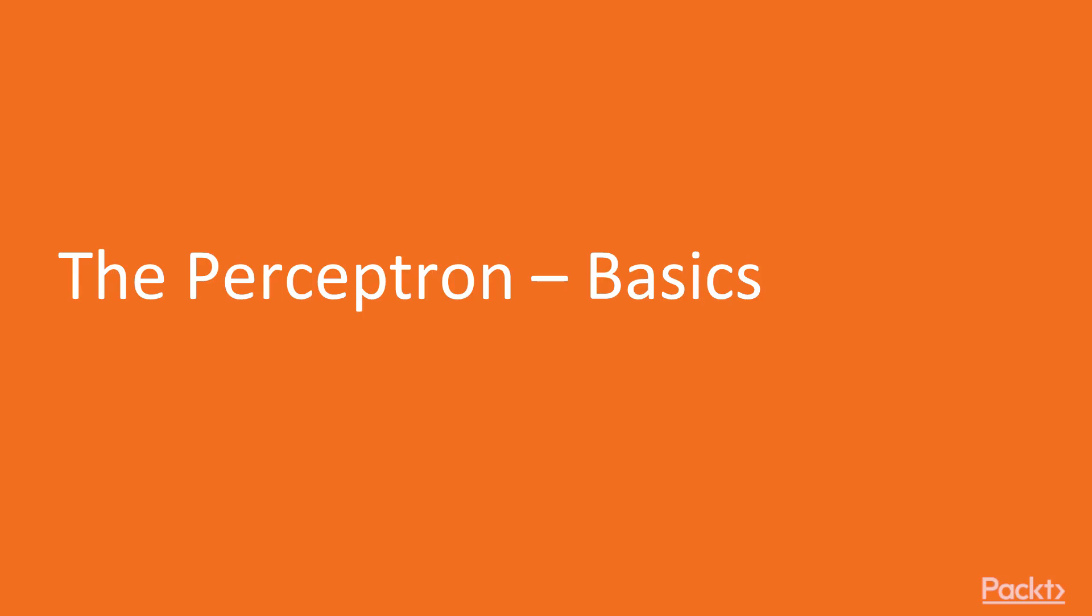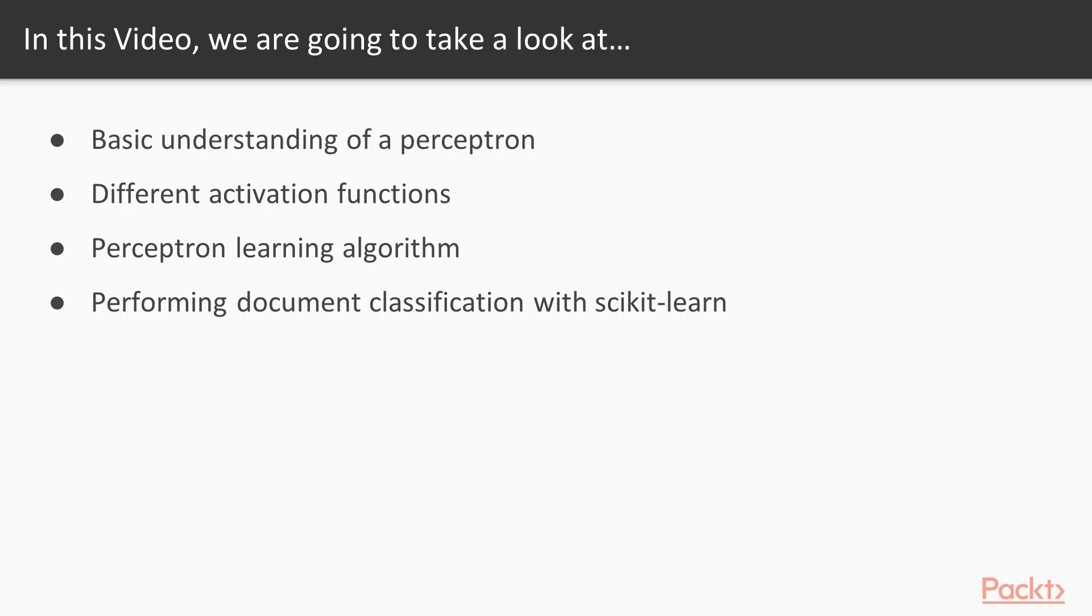Now we'll move on to the first video of this section that deals with the basics of perceptron. In this video we're going to start with the basic understanding of a perceptron, then we'll look at different activation functions and the perceptron learning algorithm. We'll finally perform document classification with scikit-learn.